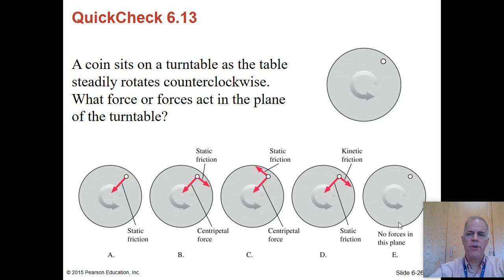Here's a coin on another turntable. So again, we're looking down at a record player and we want to know what force is acting in the plane of the turntable. So we're ignoring vertical forces and we're only dealing with the ones that are in the plane here. And the answer is friction.